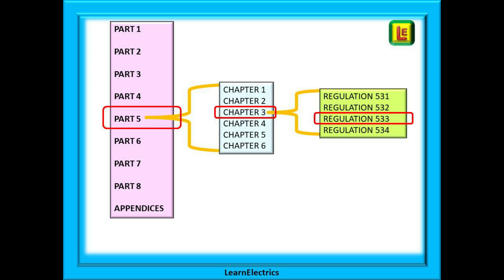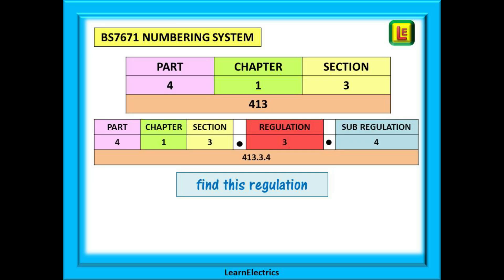So how are we going to find the answer to an exam question, or even an on-site workday question, in all 600 pages of the Wiring Regulations? Here is an example of how a regulation number is built up in Part 4. Let's find this regulation. It is in Part 4, in the first chapter of Part 4, and the third section. Now find the third regulation and the fourth sub-regulation. This will be written as 413.3.4.